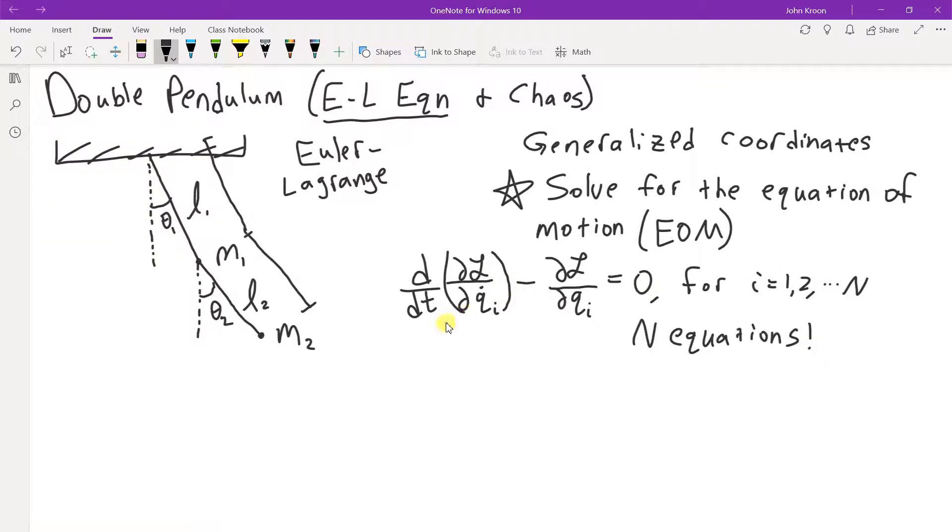So what is L? I like to write it as script for the Lagrangian. This is the kinetic energy minus the potential. So that's the kinetic.